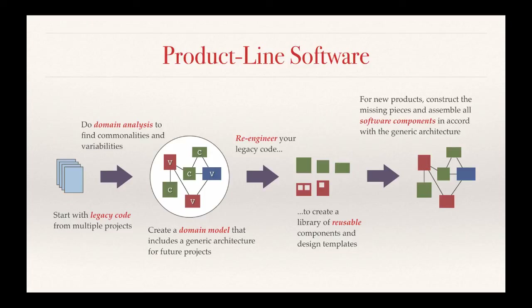Once you have this generic architecture, you can see how all the pieces fit together and build future systems faster by combining the custom components — the variabilities — with the reusable components — the commonalities.